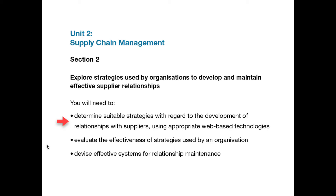Following on from the above, you will need to identify and describe an actual strategy being used by a specific organisation and give your view on how effective this is. On bullet point 3, you need to describe the policies, procedures and mechanisms that you feel are needed to support purchaser-supplier relationships.